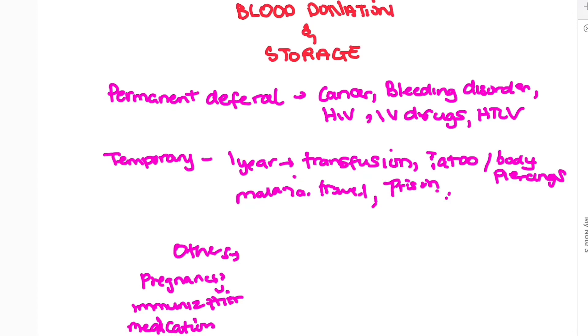Temporary deferral includes a one-year deferral if you have a blood transfusion in the last year. If you have a tattoo or body piercing, however if it's from a licensed company they may allow you to donate blood. Also if you've been traveling to Africa or other regions where malaria is endemic, then they may defer you because of that. If you've been in prison for more than three days or 72 hours, then you will be deferred for one year.